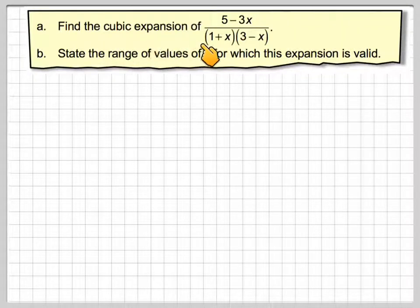Find the cubic expansion of 5 minus 3x over 1 plus x times 3 minus x. State the range of values of x for which this expansion is valid.